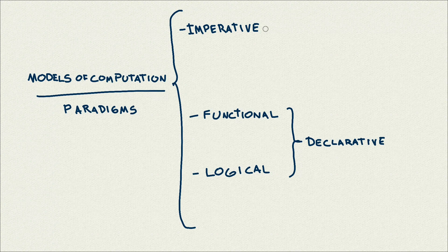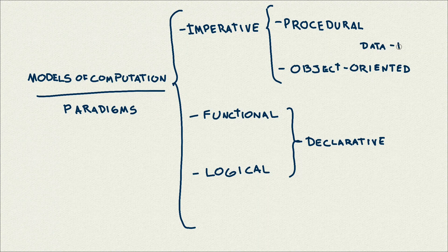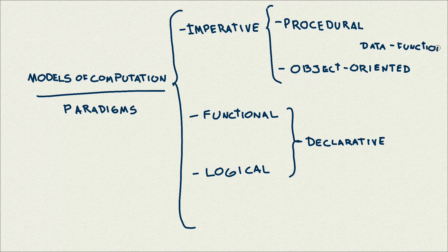Inside the imperative model, you will see two approaches. One is the procedural approach, and the other one is object orientation. We can summarize broadly the difference between them in the relationship they have between data and functions. In the procedural model, the data can be separated from the functions, while in object orientation, they try to be together — and we will see later why.